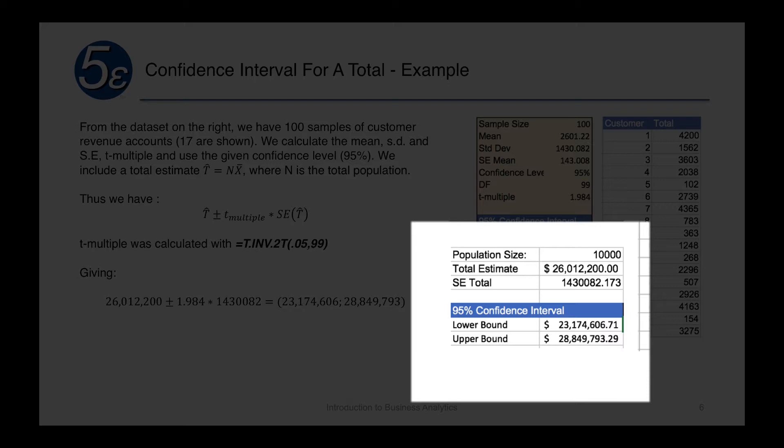Our standard error total, which we calculated, is going to be 1,430,082. Now when we do this, we're going to create a 95% confidence interval for the total.